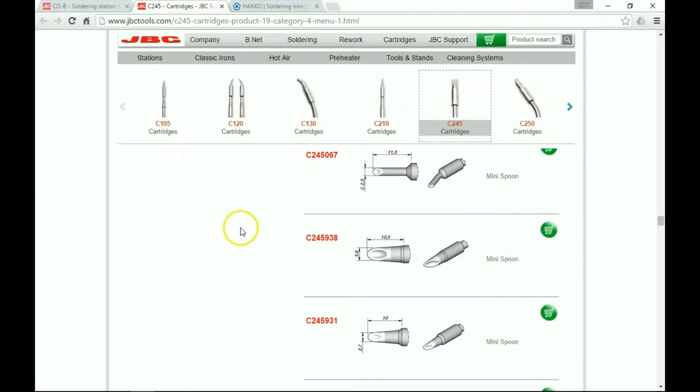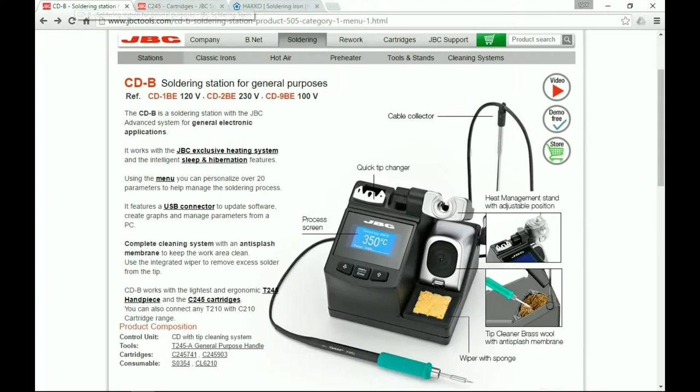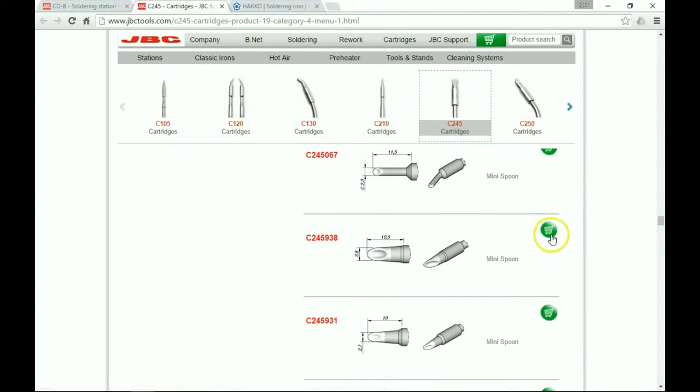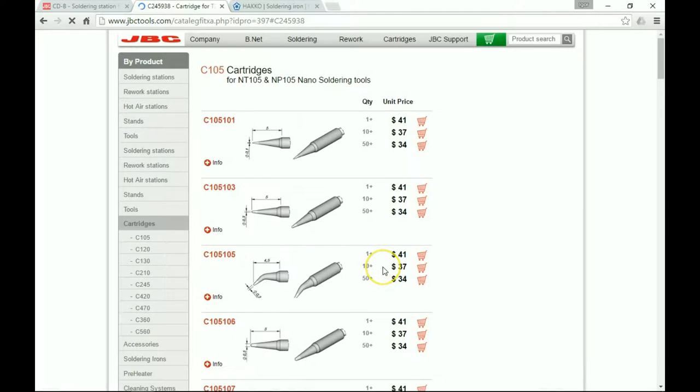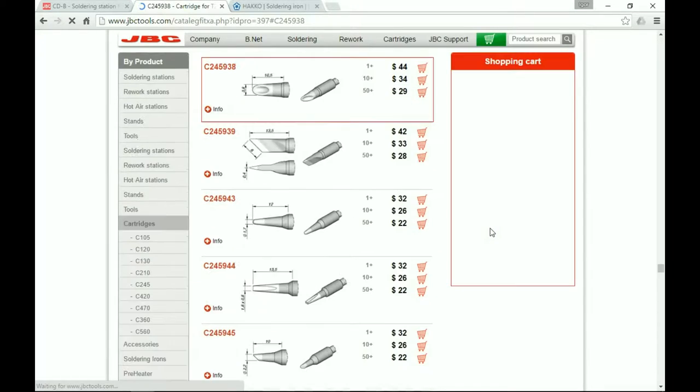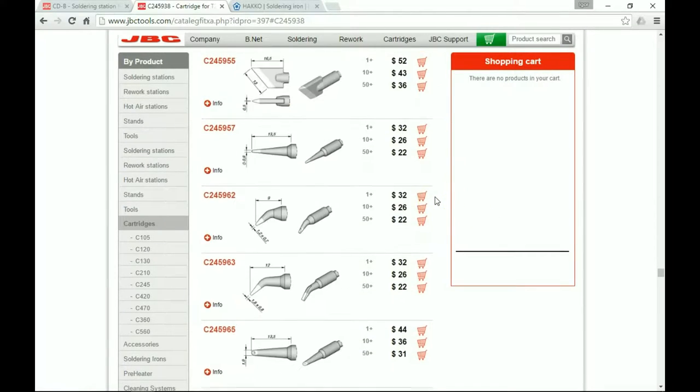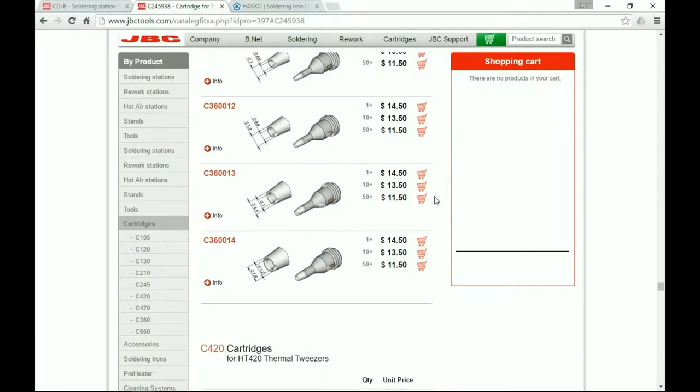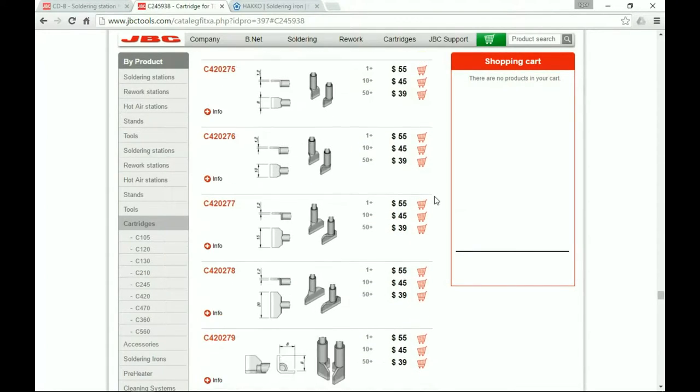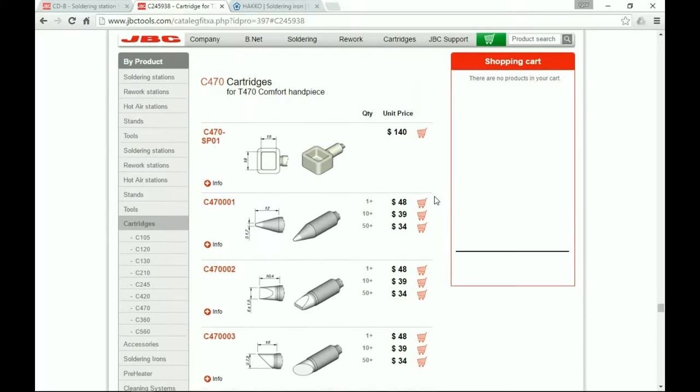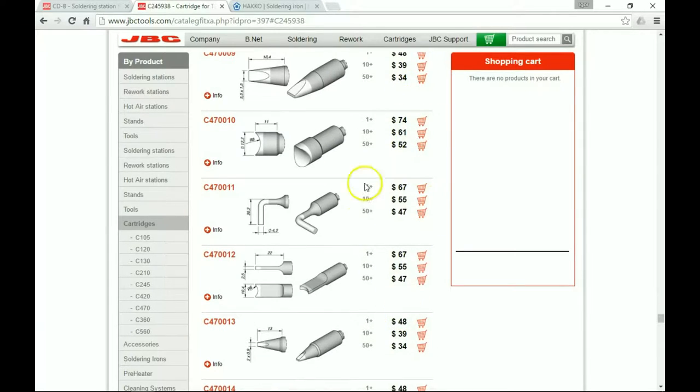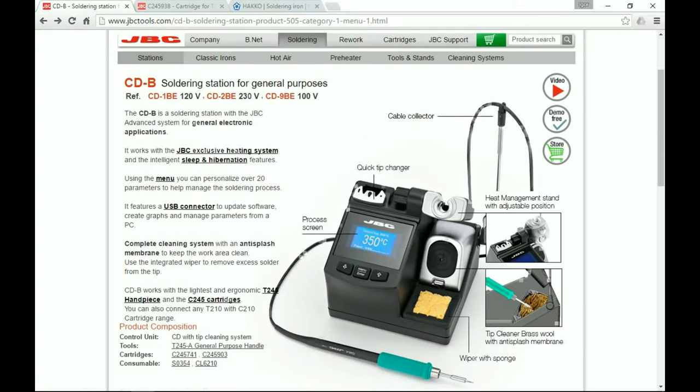Now here's some of the downfalls of the station. The tips for the station here are rather expensive. Let's take a look at, let's say, this mini spoon tip. They're in the $30 to $40 range if you're lucky, and some of these are in the $60 to $80 range. So the tips for this are quite pricey.